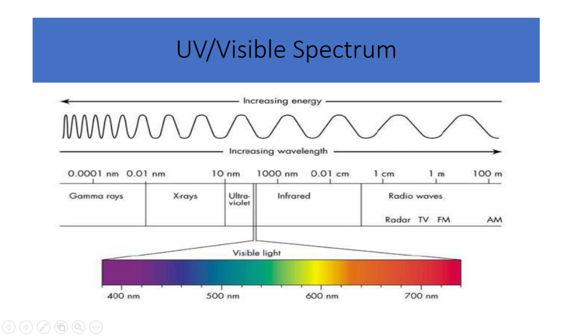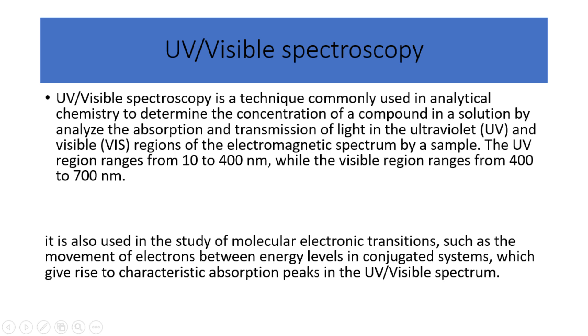UV visible spectroscopy extends beyond the visible range into the adjacent UV region, typically ranging from 10 to 400 nanometers. UV visible spectroscopy is a technique commonly used in analytical chemistry to determine the concentration of a compound in a solution by analyzing the absorption and transmission of light in the ultraviolet and visible regions of the electromagnetic spectrum via sample.